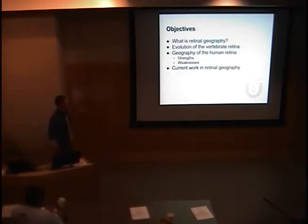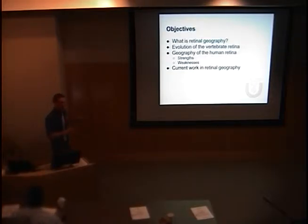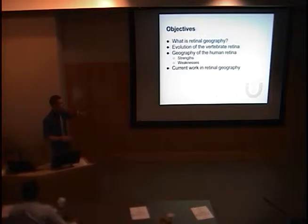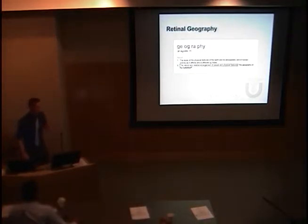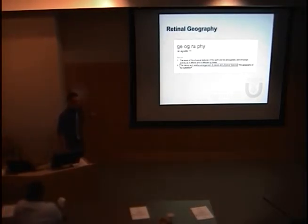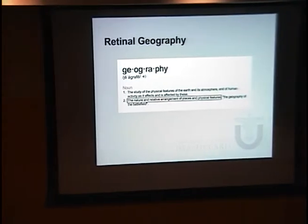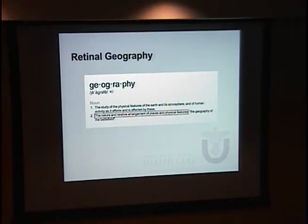I'm going to talk about what I mean when I use the term retinal geography. Geography means by itself essentially making pictures of the earth, but the term has come to mean the relative arrangement of features within a structure — understanding the geometry and orientation of different structures within an entity. When I say retinal geography, I'm largely talking about how retinal features and structures differ in the center versus the periphery.